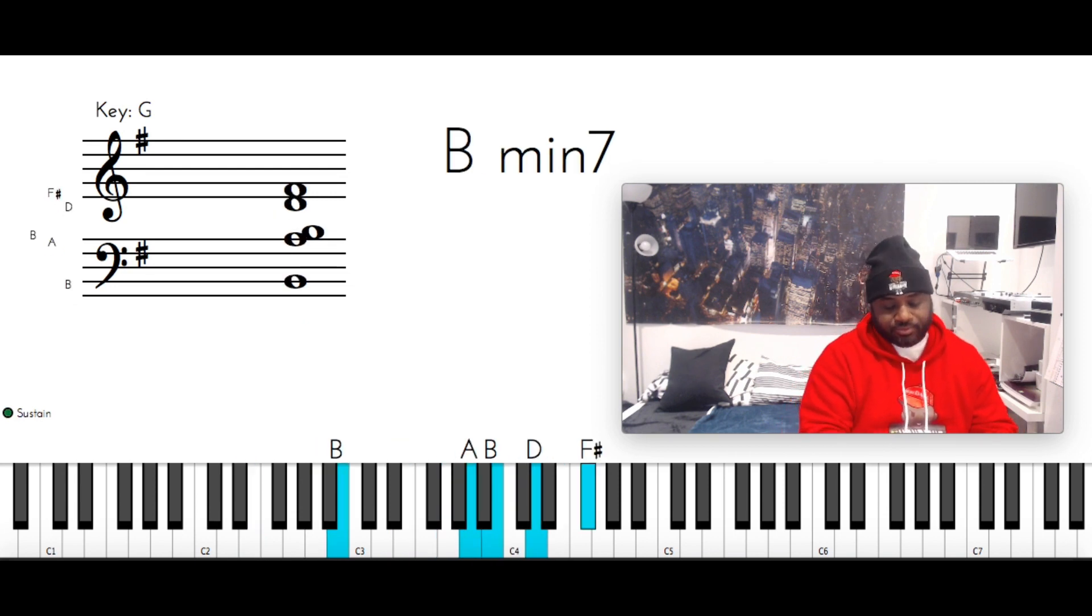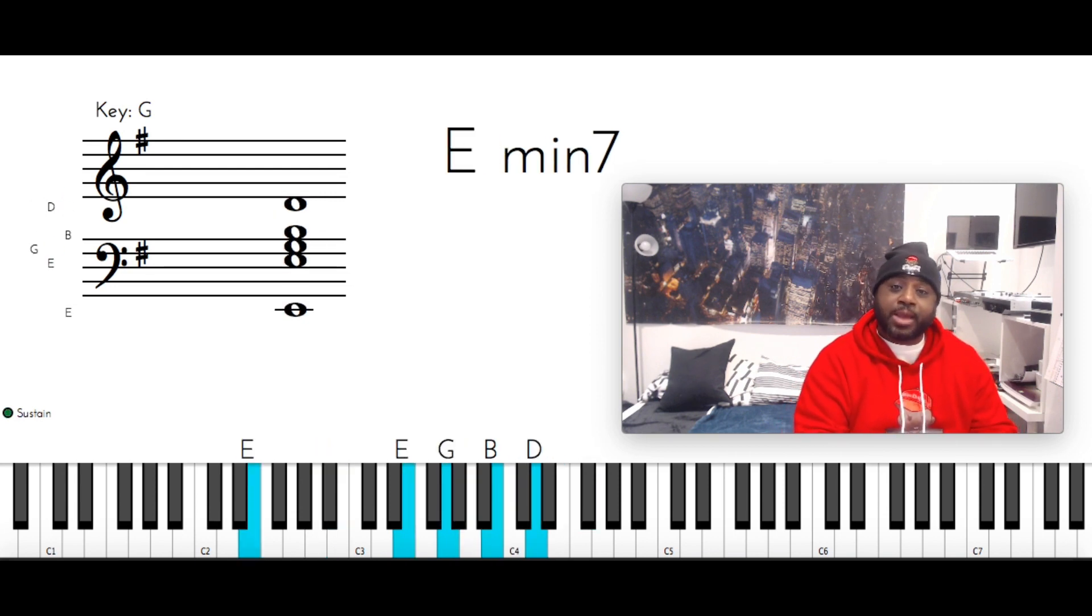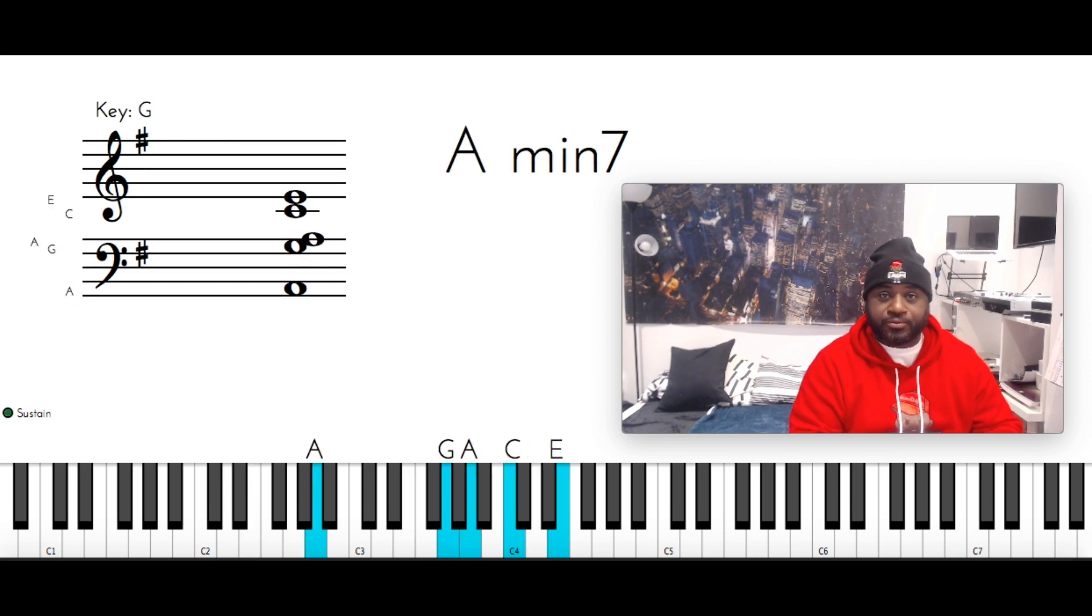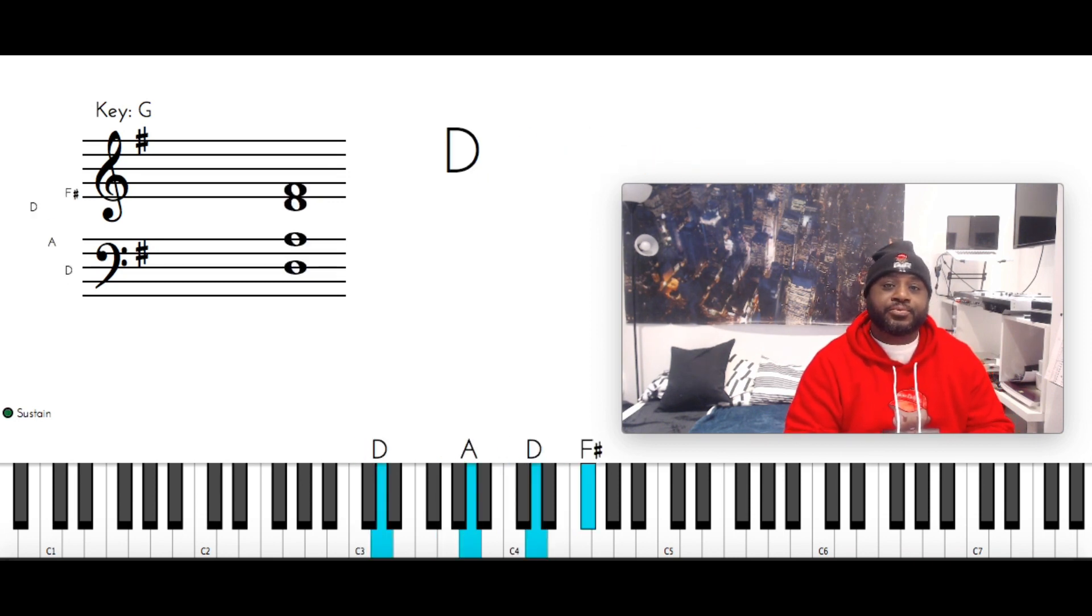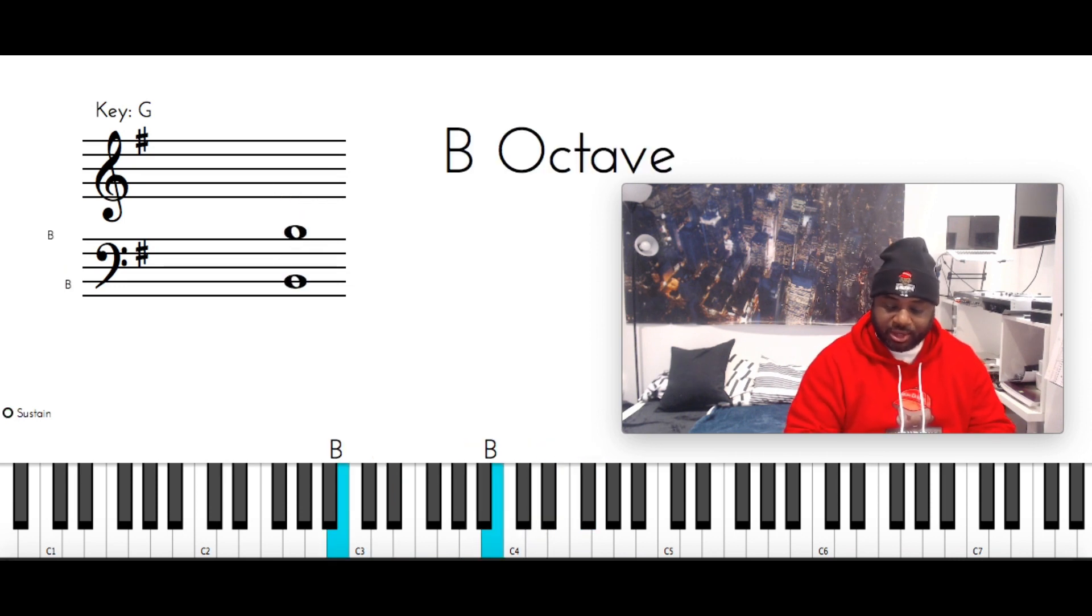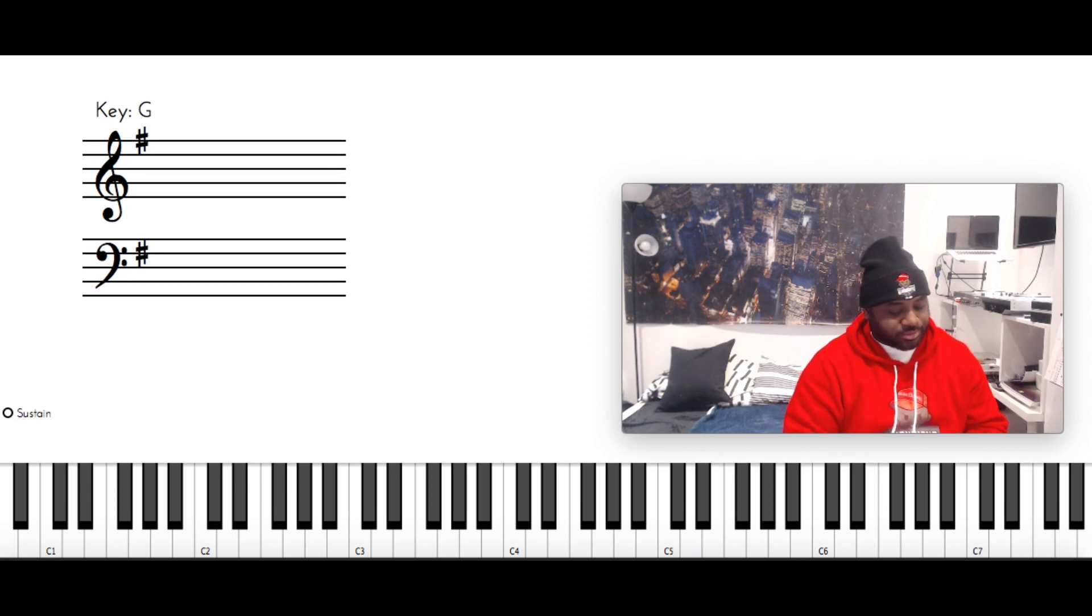Now this time you're going to hit the A minor 7, go to a C major. C with the left, G, C, and E. Then you got D major, D with the left, A, D, and F sharp. And then you're going to turn around with the D major, B, B, B, D sharp, F sharp, and then you go back into the chorus.